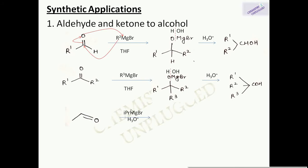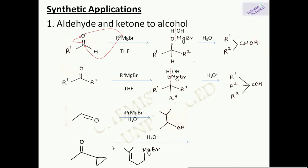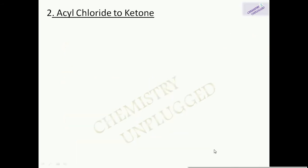Using a ketone in the reaction gives a tertiary alcohol. For example, using acetaldehyde with an isopropyl Grignard reagent, the isopropyl group attaches and the carbonyl oxygen becomes an alcohol. In another example, the entire Grignard carbon group attaches to the carbonyl carbon, and the carbonyl oxygen becomes an alcohol, yielding a tertiary alcohol.